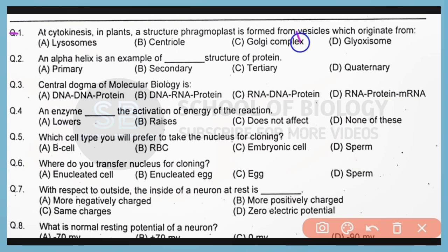Correct answer is option C. Question 2. An alpha helix is an example of which structure of protein? Correct answer is option B. Alpha helix is an example of the secondary structure of protein.